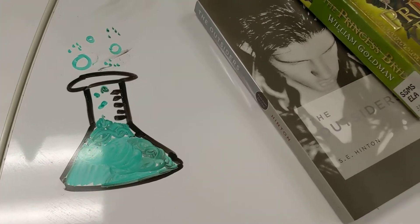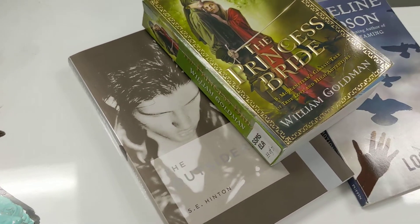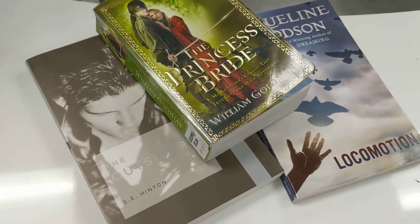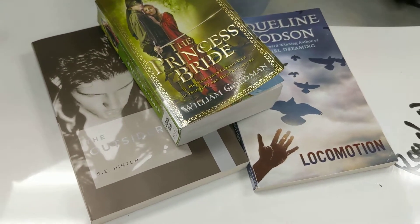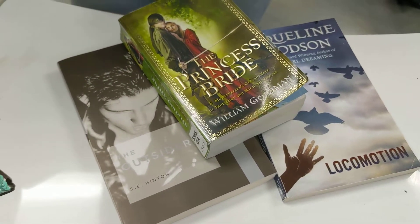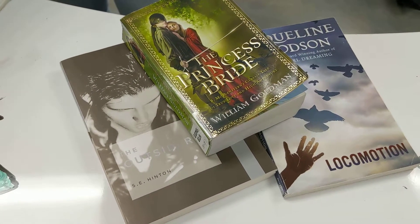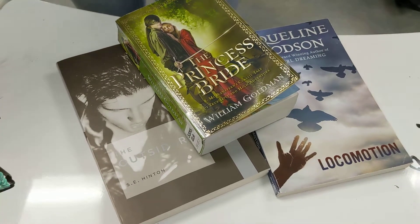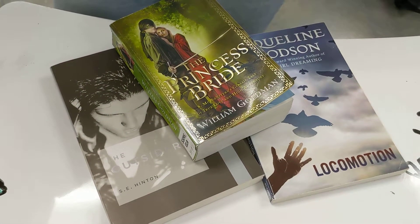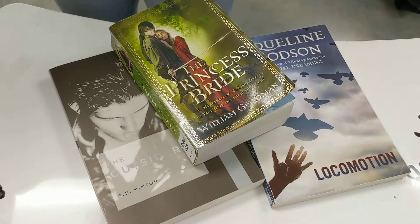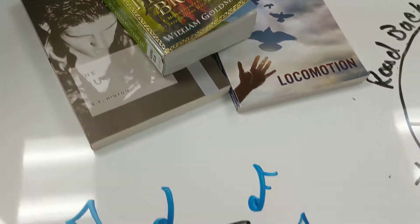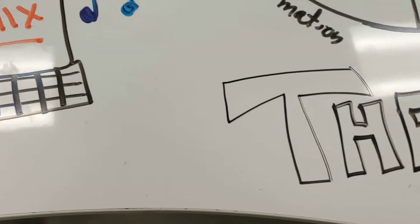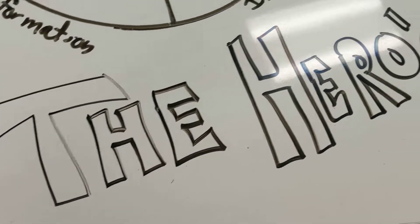We spend a year understanding what connects Wesley from The Princess Bride to Ponyboy in The Outsiders to Colin's story in Jacqueline Woodson's novel Locomotion. Our students make connections between the characters and stories in ways that really blew us out of the water. At the end of the year, our students took their understanding of the hero's journey and created their own stories, placing their own heroes at the center and taking them through the journey and resolutions.